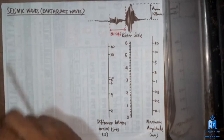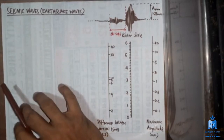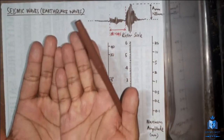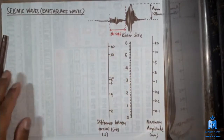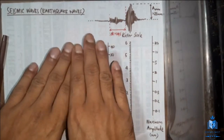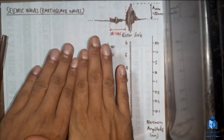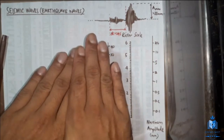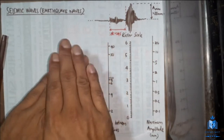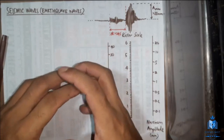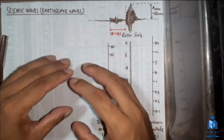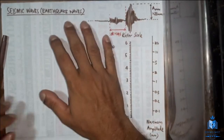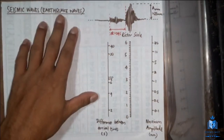This theory part is about seismic waves, also known as earthquake waves. Earthquakes are created because under the earth there are tectonic plates. These tectonic plates keep moving on top of each other smoothly, but sometimes they get stuck. When a tectonic plate wants to move but gets stuck, due to friction a large amount of energy accumulates, and when this energy is dispersed out of the earth's crust, that is what we call an earthquake.